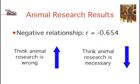As you might have guessed, the researcher found a negative relationship between these two variables. The R was negative 0.654. This shows that the more students think animal research is wrong, the less they think it is necessary.